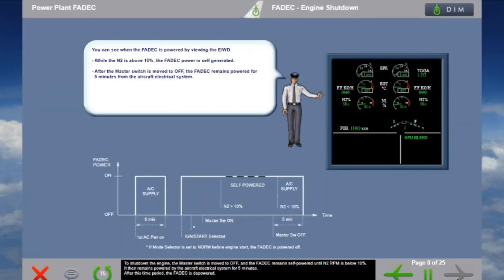To shut down the engine, the master switch is moved to off, and the FADEC remains self-powered until N2 RPM is below 10 percent. It then remains powered by the aircraft electrical system for five minutes, after which the FADEC is depowered.